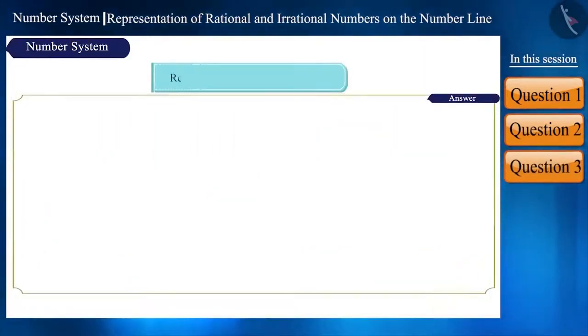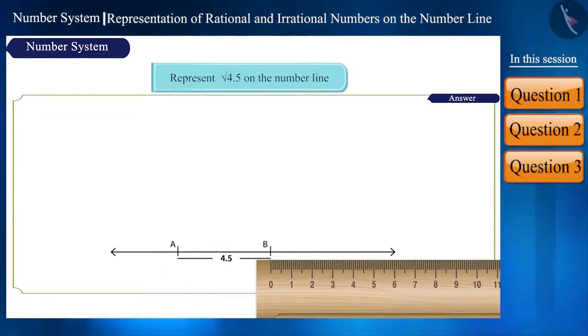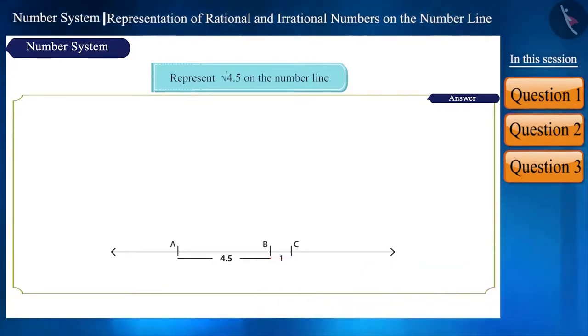Represent √4.5 on the number line. Let's see how to do the same. On a line, take point A and B such that the distance between points A and B is 4.5 units. Now, from point B at a distance of 1 unit, mark a point C on the number line. Now, find the midpoint of line AC which will be AB plus BC divided by 2. Here we get O.